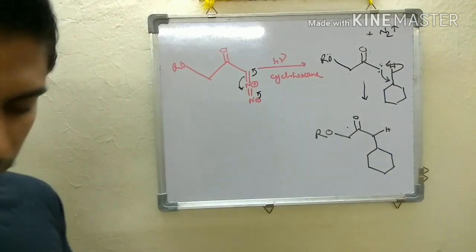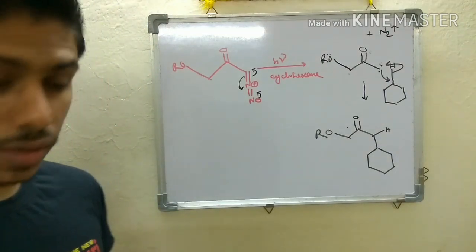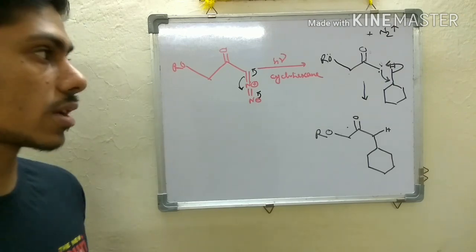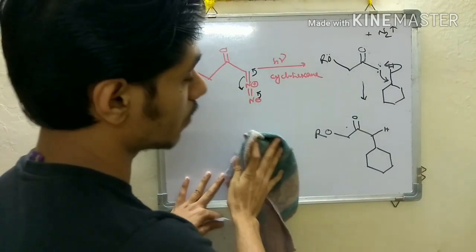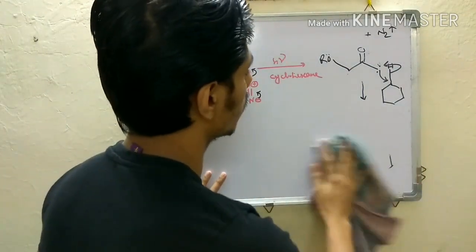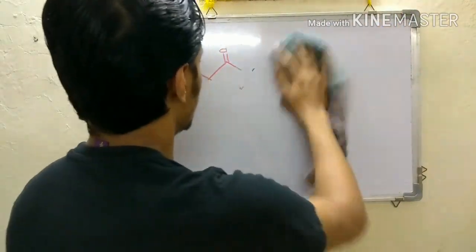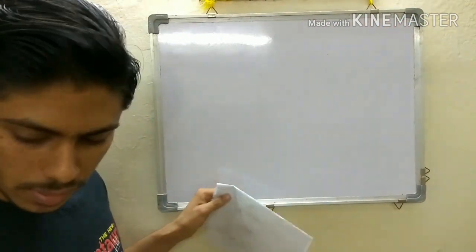Carbenes are very reactive and they can react with inert solvent like cyclohexane also. Now this problem is not very important but why I am discussing this problem is because the next problem which I am going to discuss is something related to this one.